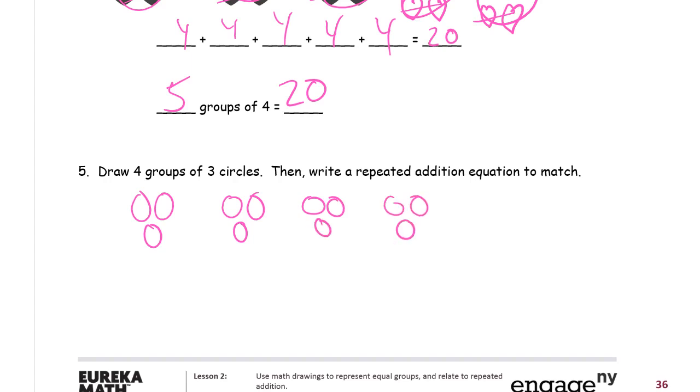There. And then write a repeated addition equation to match. That's adding threes, right? Three plus three plus three plus three. And you can count them all by twos or by ones.